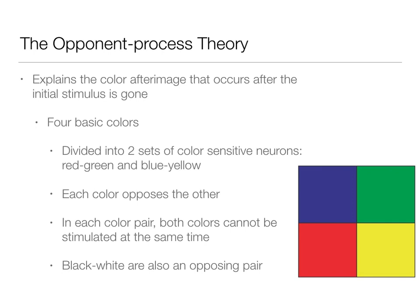The way the after-image works is that by staring at that black dot, your cones get worn out — they become less sensitive because of over-activation from staring at the blue, green, red, and yellow. When you take that image away, the reverse is shown because of this color bleaching in your eyes. It'll just take a minute and it'll go away. In each color pair, both colors cannot be stimulated at the same time.